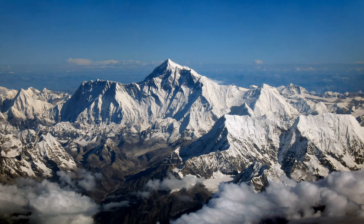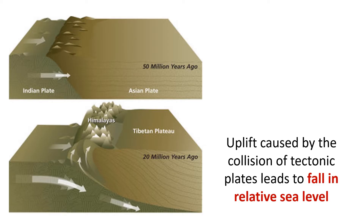Mountain building involves a lot of geologic force. Mountains can form where two land masses, or tectonic plates, collide with each other. Today, the Himalayas include the tallest mountains in the world, including Mount Everest. But 50 million years ago, they did not exist. The Himalayan mountains began to form when a tectonic plate called the Indian plate collided with another called the Asian plate. At that time, the land masses were both located close to sea level. However, the collision caused the land masses to buckle and the Asian plate to be uplifted. This buckling and uplift folded and bent many of the rocks in the Himalayas.